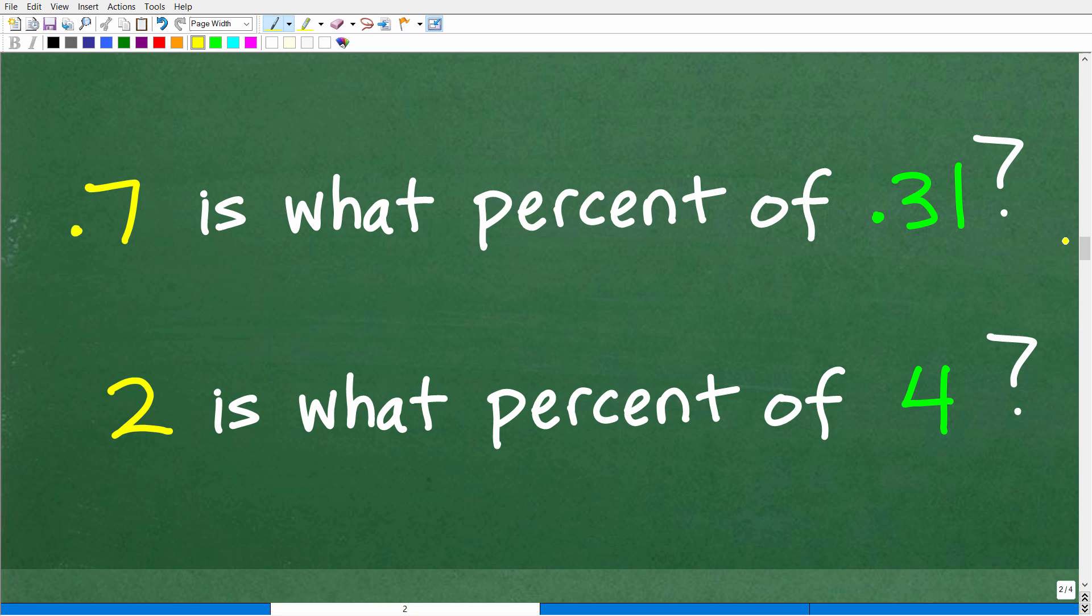Okay, so 0.7 is what percent of 0.31? Now, let's suppose you're kind of confused about what should I do here. A great technique you can use in math, if you're not really understanding the question, is to replace values with simpler numbers and see if you can kind of understand the problem a bit better. So 0.7 is what percent of 0.31? Let's just kind of change out these values for some easier numbers. What if I gave you this question: 2 is what percent of 4? You don't even need a calculator to answer this question. 2 is what percent of 4?